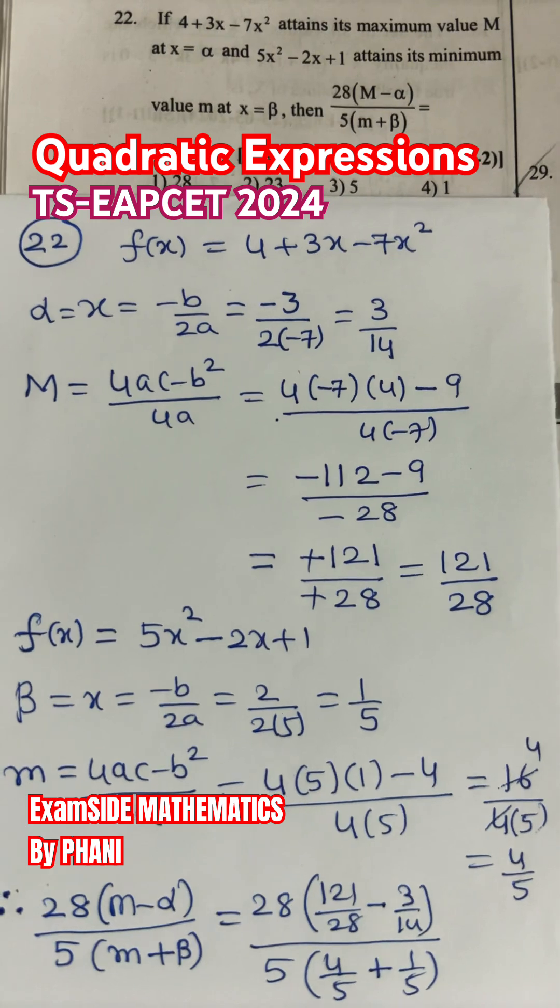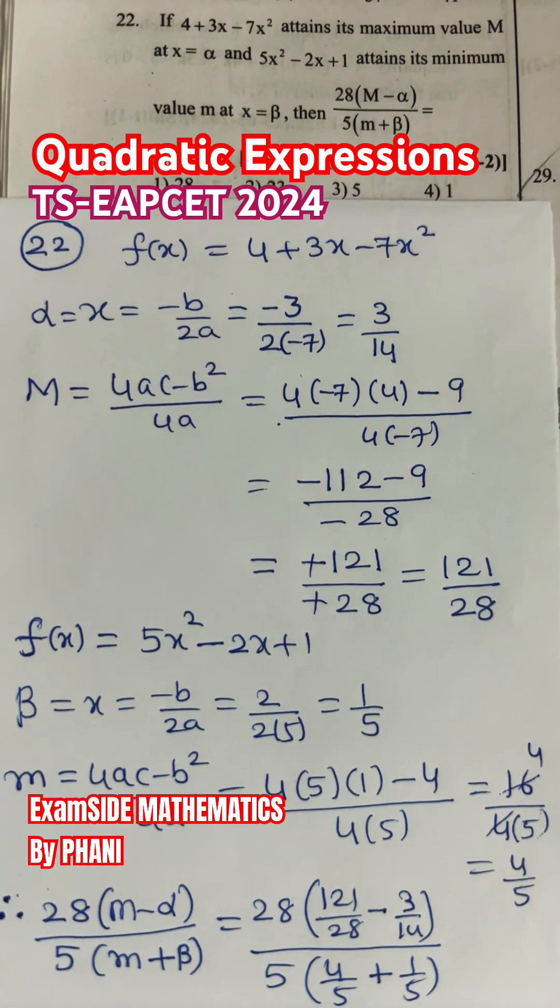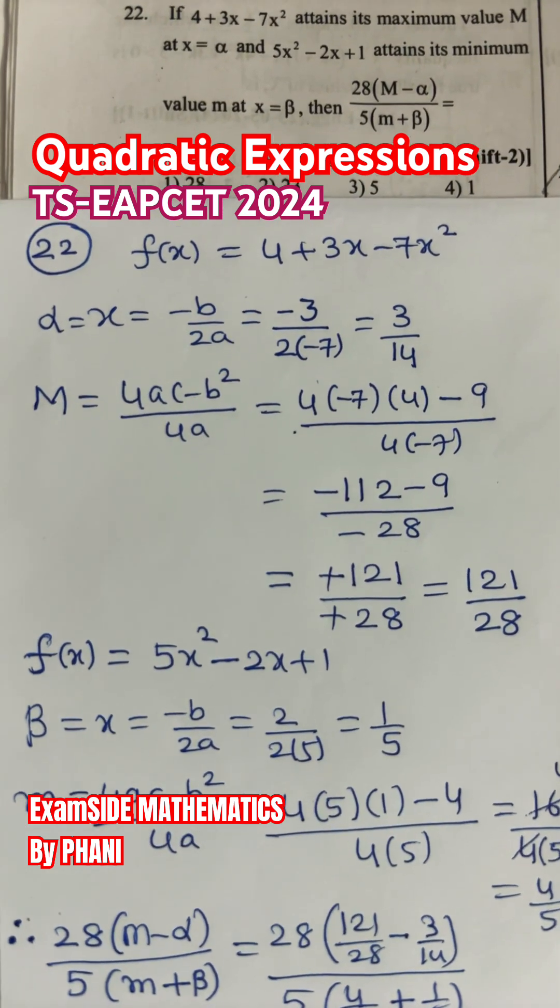then the value of 28(M - α) / 5(m + β) equals, so options are provided.